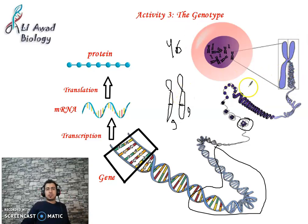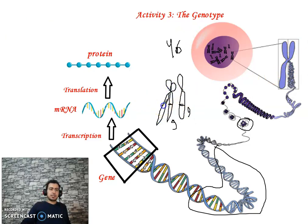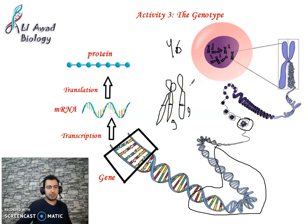Whether the chromosome has one or two chromatids, on every chromatid there is a gene — for example, the gene of blood group is present on each chromatid.